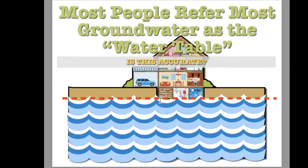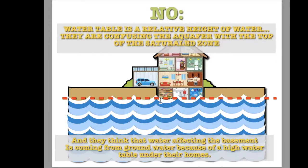Most people refer to groundwater as the water table. When you're having a chat with a contractor, a lot of times people will just say, 'Well, we have a groundwater issue. What's your water table?' Referring to groundwater as water table — is that accurate? No. Water table is relative. When you say water table, what you're really referring to is the relative height of the water in the ground. You're not really referring to any specific aquifer or spring — just the overall highest point where it's saturated in the soil.